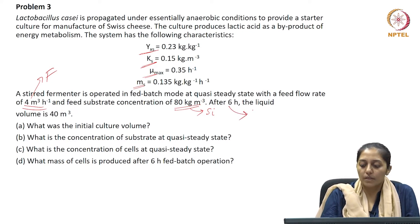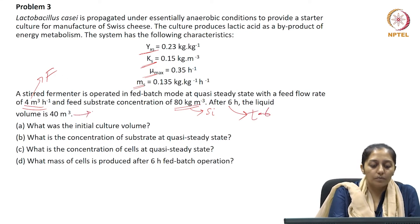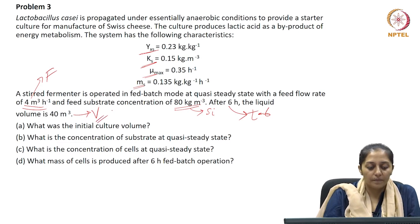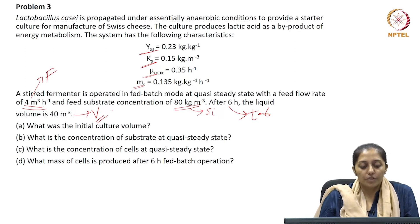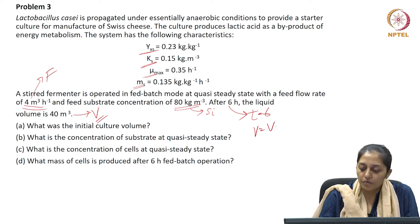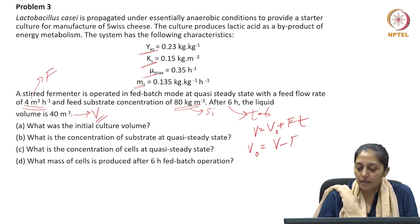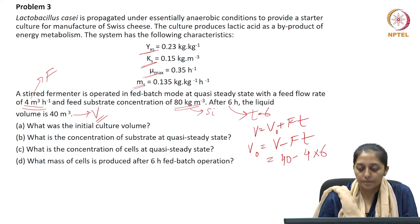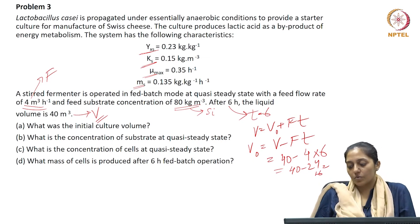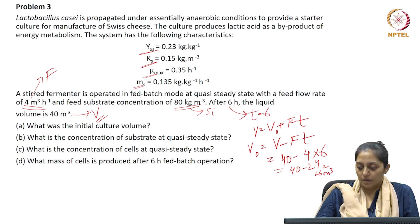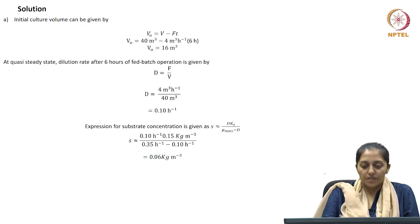After 6 hours, the liquid volume is 40 meter cube. What is the initial culture volume? For a constant feed flow rate system, V equals V₀ plus F times T, so V₀ equals V minus F times T. V is 40 m³, F is 4 m³/hr, and time is 6 hours, so V₀ comes out to be 16 meter cube.